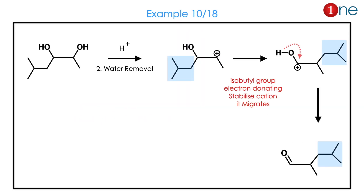Let us look at the next question — an obvious one. It is an asymmetric alcohol. As acid acts, the cation is formed. The isobutyl group is electron-rich and migrates, forming the cation. Finally, it forms a linear ketone. Even though the migrating group is bulkier, it will still migrate and forms the ketone.